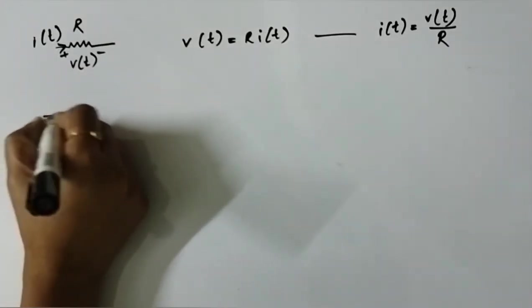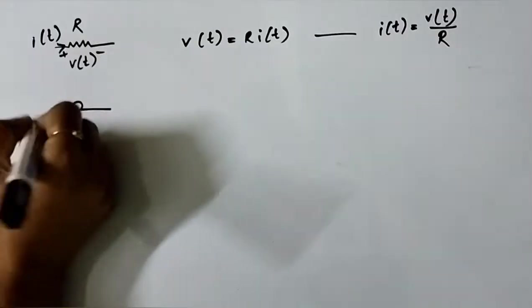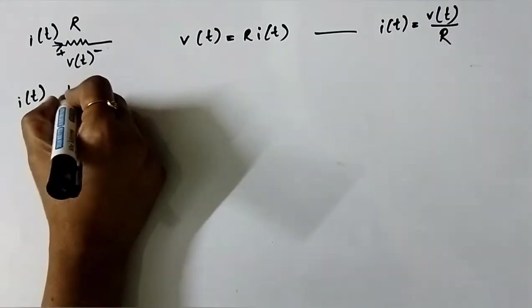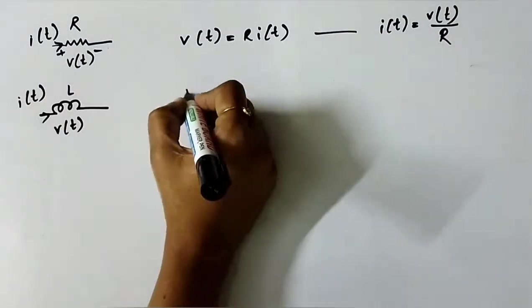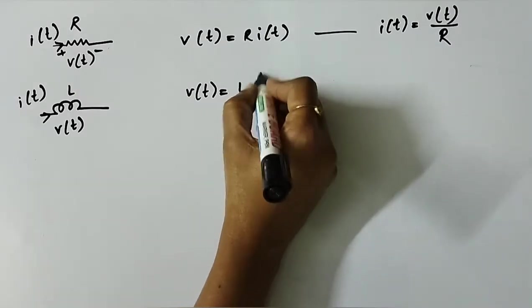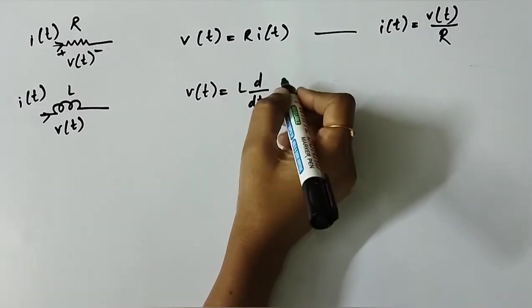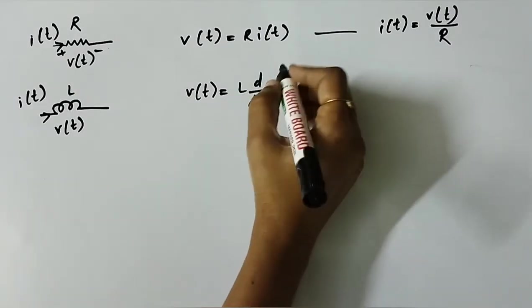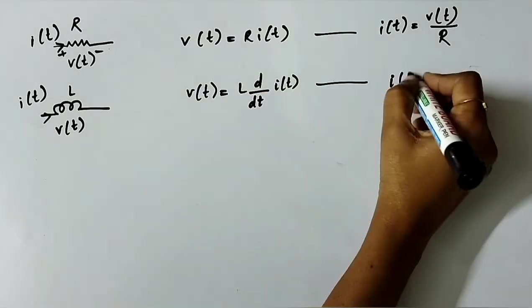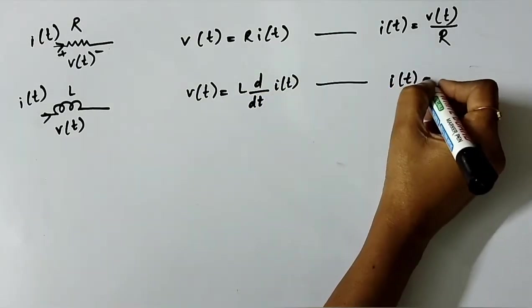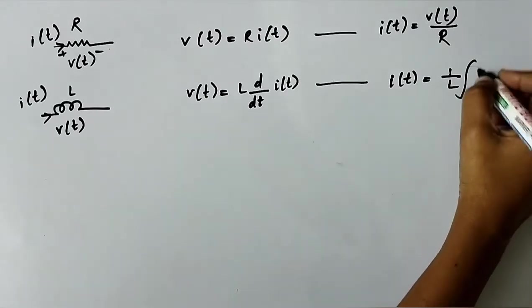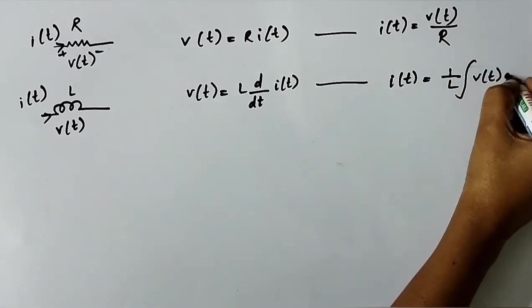For an inductor, V(t) = L · d/dt of I(t), and I(t) = (1/L) · integral of V(t) dt.